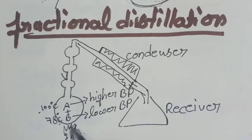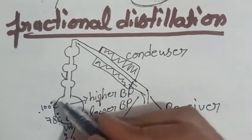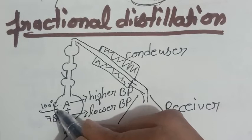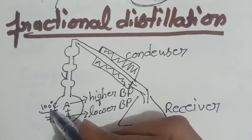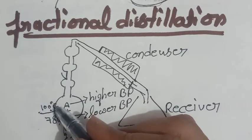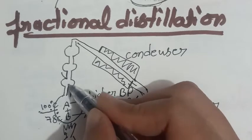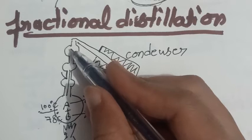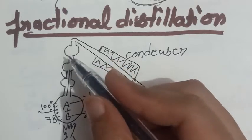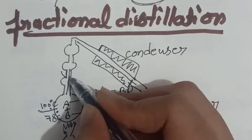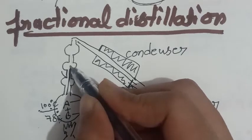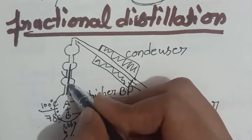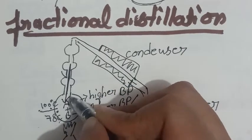So, jabhi, hum log here flame provide kareenge, dono ko hi jab heat milegi, they will start moving into the form of vapor. But, jo water molecules hain, they require more energy because their boiling point is 100 degree Celsius. In ke jo molecules hoonghe, vaporize hoonghe, but this long chain ko cross nahin kar paayenge, until they will get more amount of heat. And they will, after receiving less amount of heat, they will again come back into this flask.